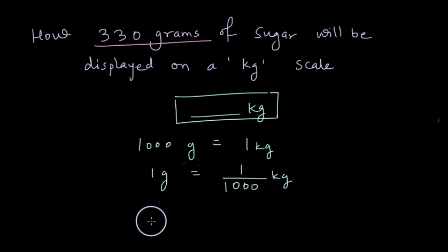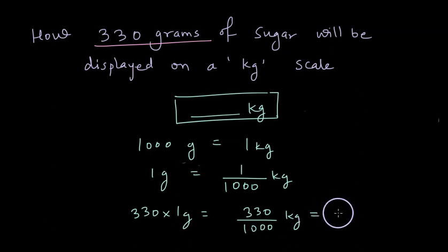But I have 330 such grams. So if I multiply both sides by 330, I get 330 gram is equal to 330 divided by 1000 kg. This is nothing but 0.330 kg and so the number which will be displayed on the weighing scale would be 0.330 kg and this is how we can convert different units and use them in real life.